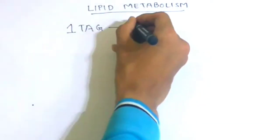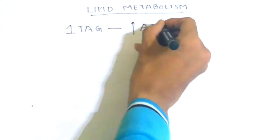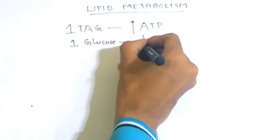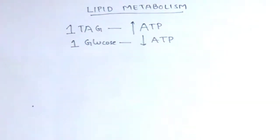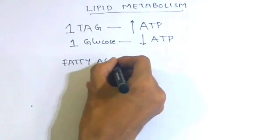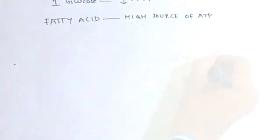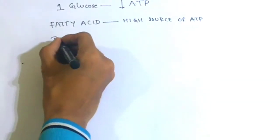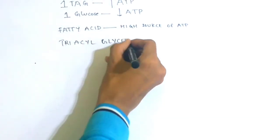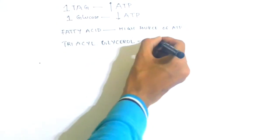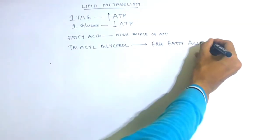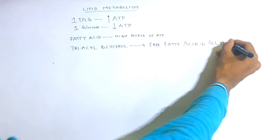One molecule of triacylglycerol yields more ATP as compared to one molecule of glucose. Hence, fatty acids are a high source of ATP. When triacylglycerol is hydrolyzed, it gives free fatty acid and glycerol.